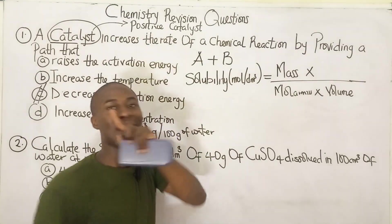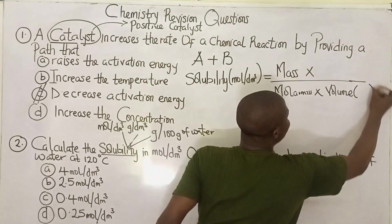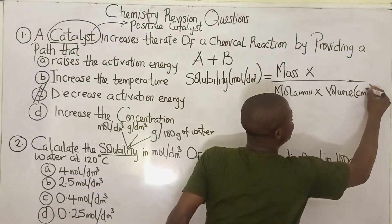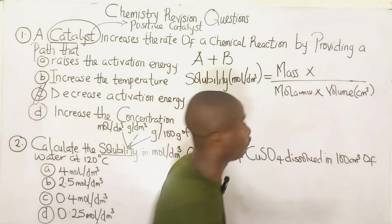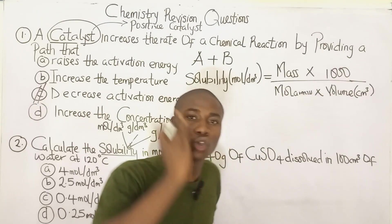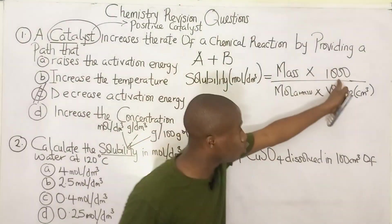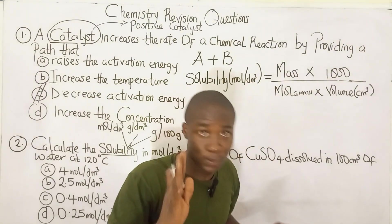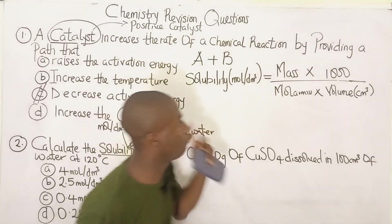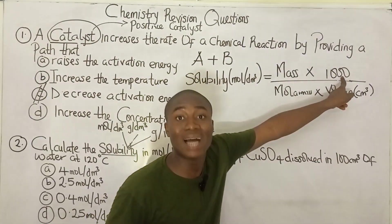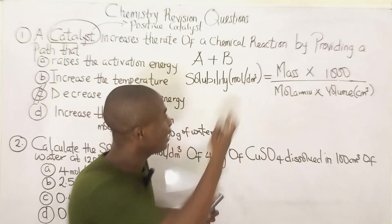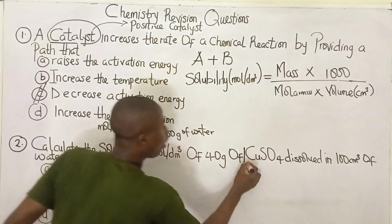It must be noted: if the volume in the question is given in cm³, you add 1000 to your formula. If the volume is given in dm³, you do not include the 1000. This is very important for conversion when solving solubility questions — be careful whether the volume given is in cm³ or dm³.